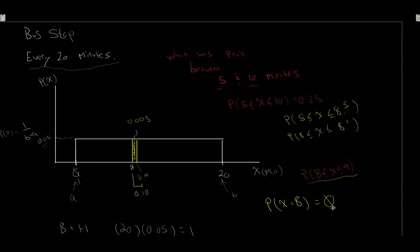When dealing with continuous probability distributions, we can never ask what's the probability that x equals exactly 8 or x equals exactly 2. It's always: what's the probability that x is within some range? What's the probability we wait between 12 and 14 minutes? What's the probability we wait for more than 15 minutes? Ranges are what we have to use for continuous probability distributions. That covers our overview of continuous distributions and their key properties, using the uniform distribution as our introduction.